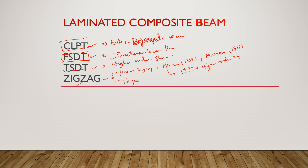About zigzag theory, the linear zigzag theory was initiated by Marco Di Sciuva in 1984. Then Murakami also gave a formulation in 1986. Further, the higher order zigzag theory was also initiated by Marco Di Sciuva in 1992. Then Cho and Parmerter also gave their formulation in 1993. And then many further improvements were made by various authors who gave higher order zigzag theories.